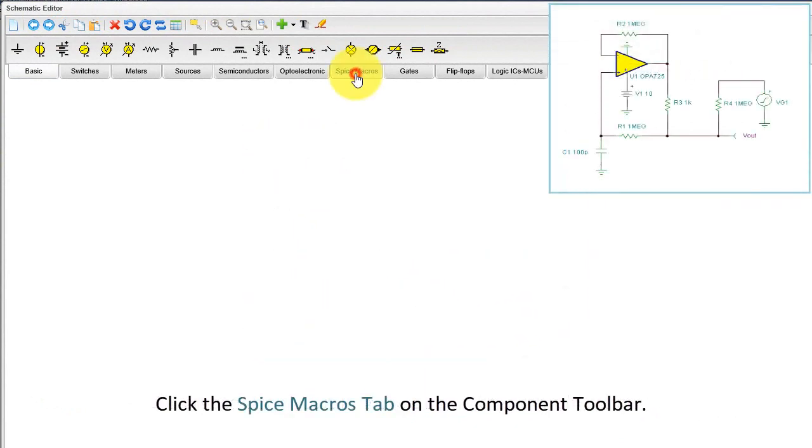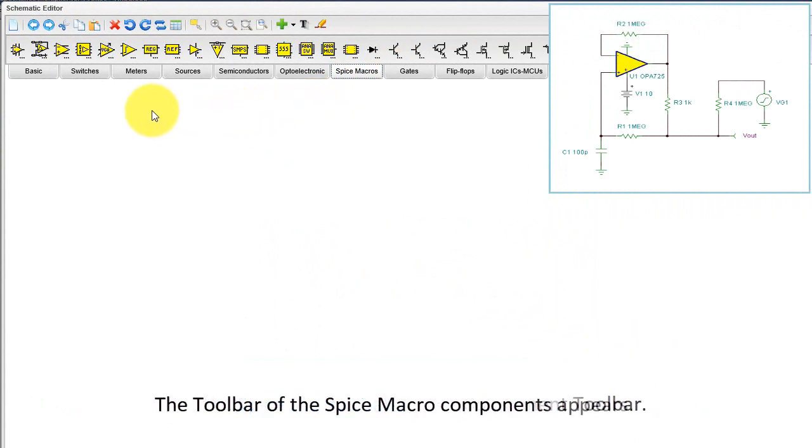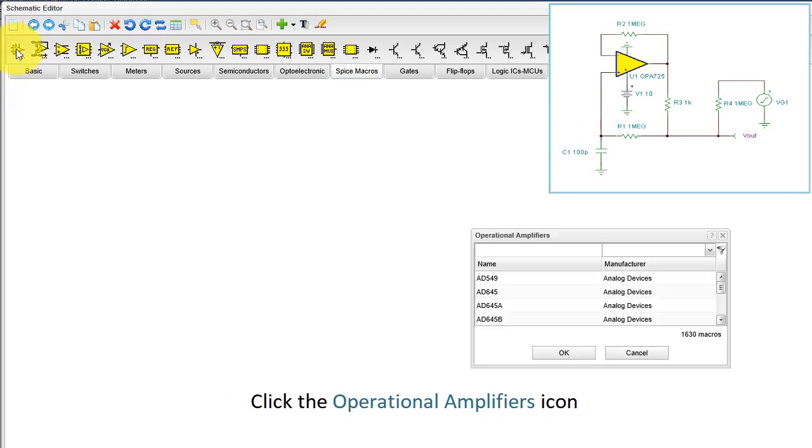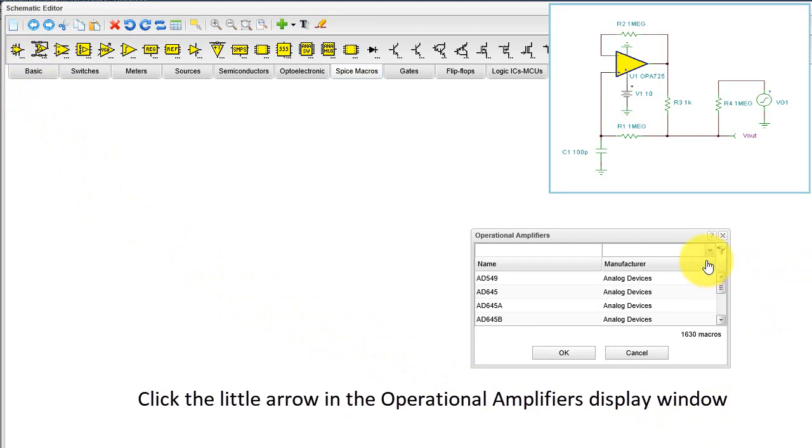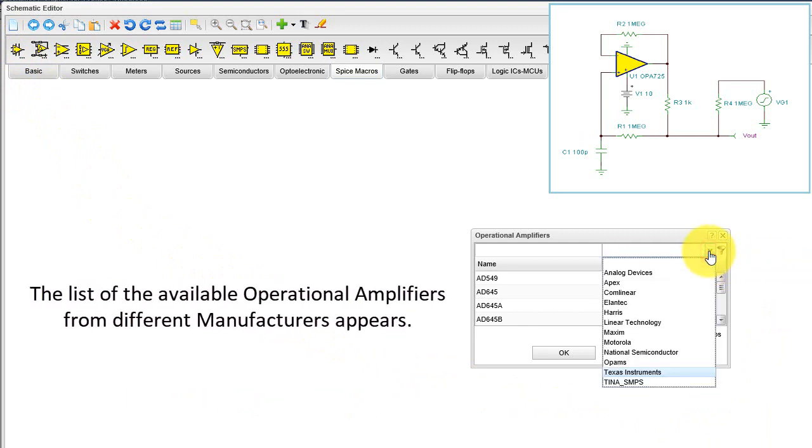Click the SPICE macros tab on the component toolbar. The toolbar of the SPICE macro components appears. Click the Operational Amplifiers icon. Click the little arrow in the Operational Amplifiers display window. The list of the available operational amplifiers from different manufacturers appears.